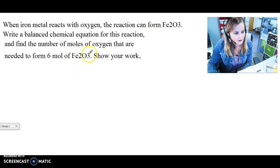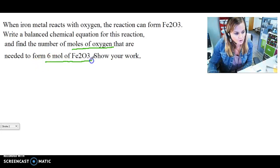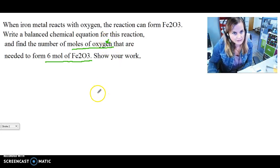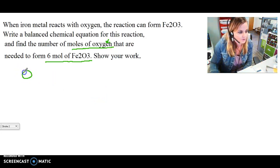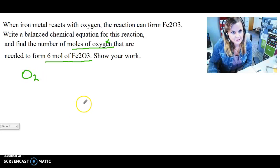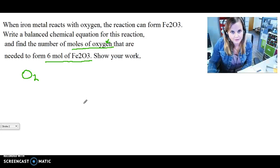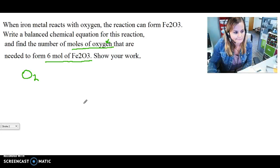So I think one of the confusing parts, it says the number of moles of oxygen that are needed to form six moles of this, and when they say number of moles of oxygen here they are not referring to just single O like the atom oxygen, but they're referring to O2, the diatomic molecule, the oxygen gas that's in the air that would be reacting with the iron. That's something I think that it's implied within the question but it's not very obvious if you're not real familiar with this.